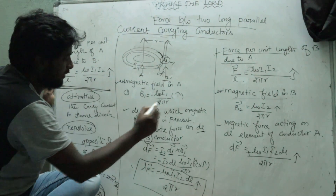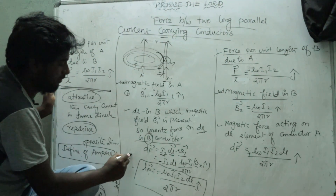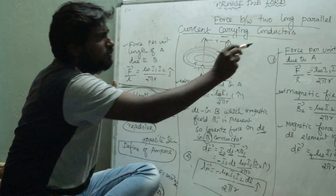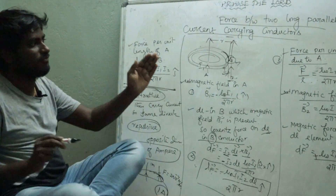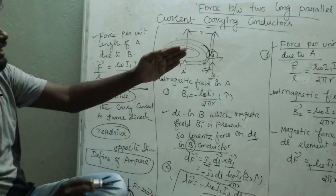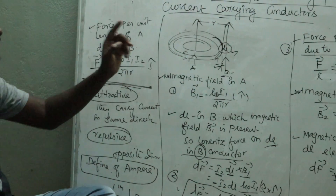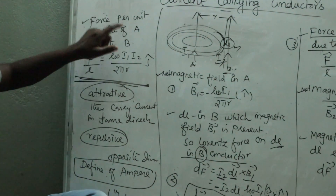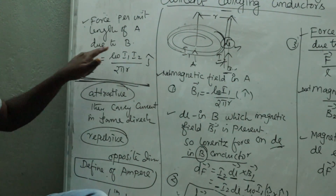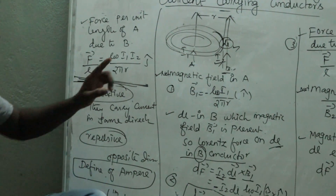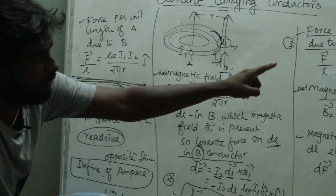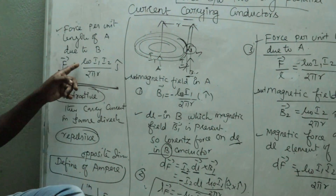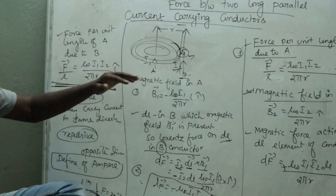The first, second, and third points are established. The force per unit length of conductor B is directed towards A. The force per unit length of conductor A is also directed towards B. The expression is: F/L = μ₀ I1 I2 / 2πR, in the ĵ direction.